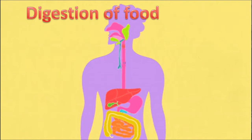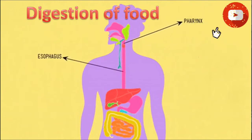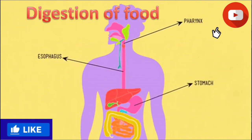Digestion of food is another example. Food molecules get digested inside the intestine into different nutrients. Such a process is called a chemical change.